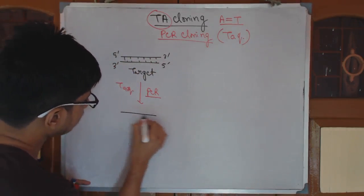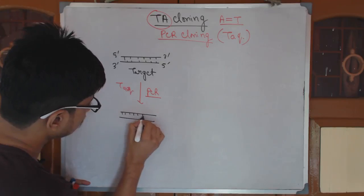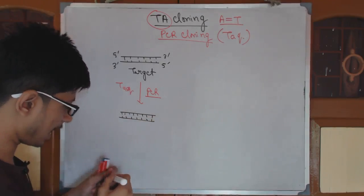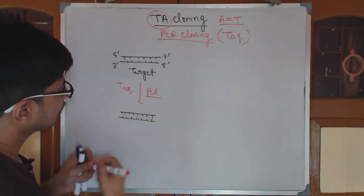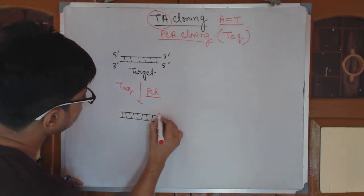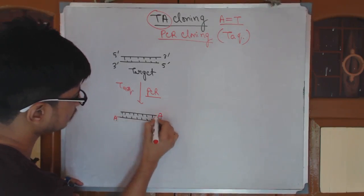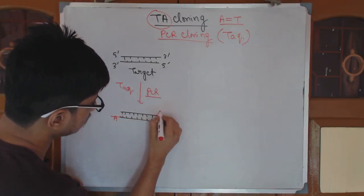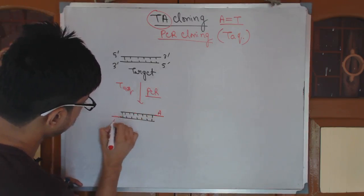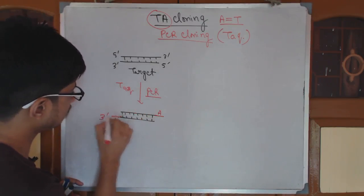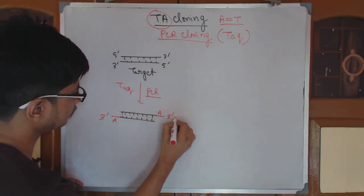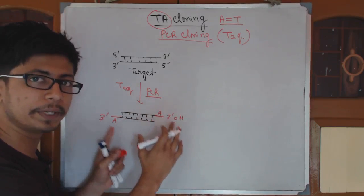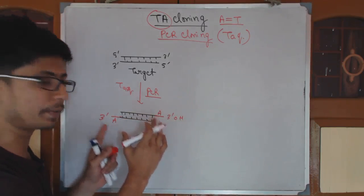So what will it look like? It will look something like this — one extra adenine attached at the 3' end. Here is the adenine, and here is another adenine attached. So one extra adenine is attached at each 3' end. This is the target DNA that we prepare. Once you prepare the target DNA, this is the first stage complete.